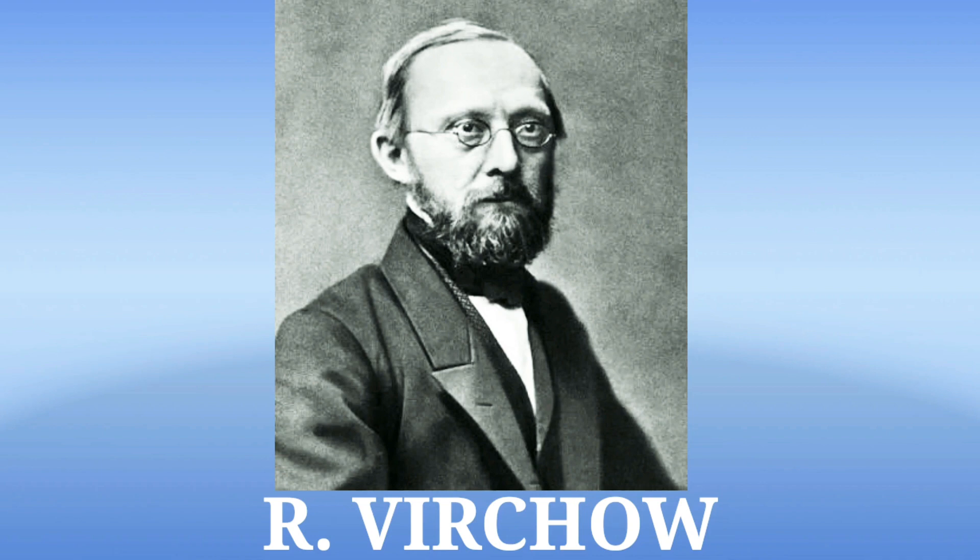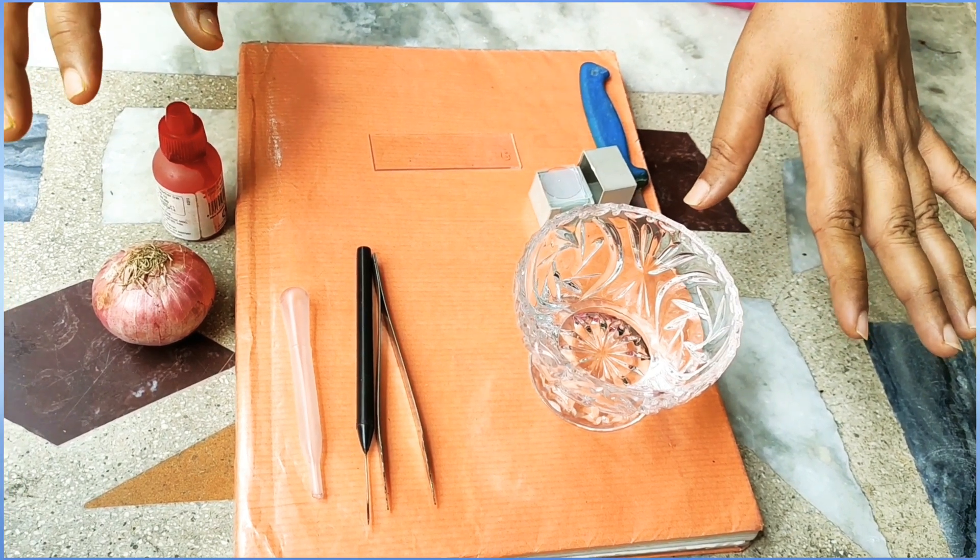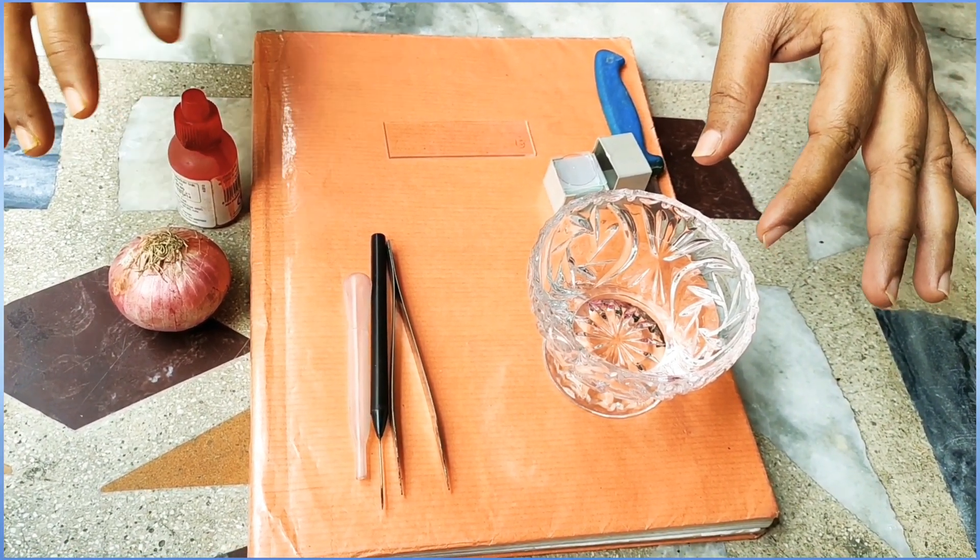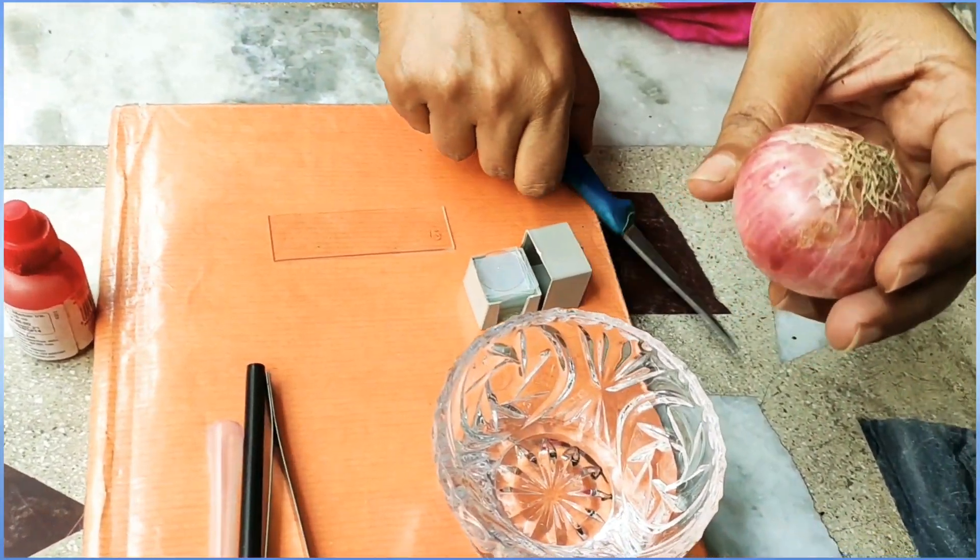To understand how does a cell look like under the microscope, let us do one activity. Today we are going to do this experiment of seeing the plant cell under the microscope. For this we need one onion, and what you need to do is that with the help of a knife you will have to cut the onion into half.